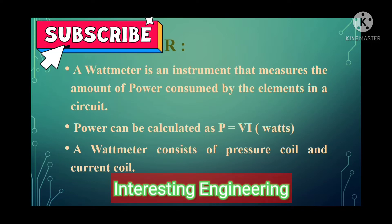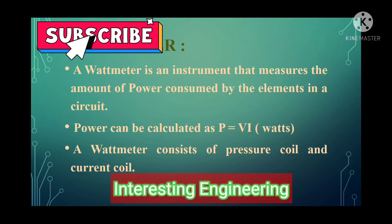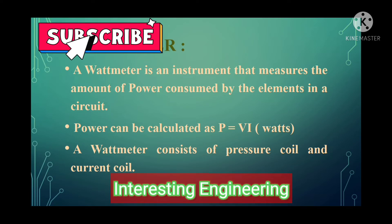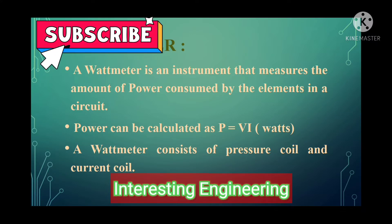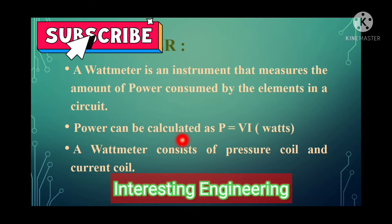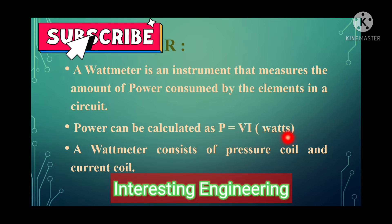A wattmeter is an instrument to measure power. It consists of a current coil and a pressure coil. The current coil is connected across the load and the pressure coil is connected across the supply voltage. The current coil carries the load current, and by means of the pointer and scale arrangement, we can measure power. Normally, power is calculated using the equation P = VI, and power is measured in watts.